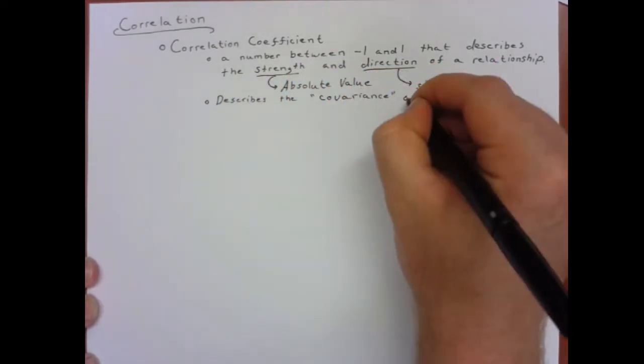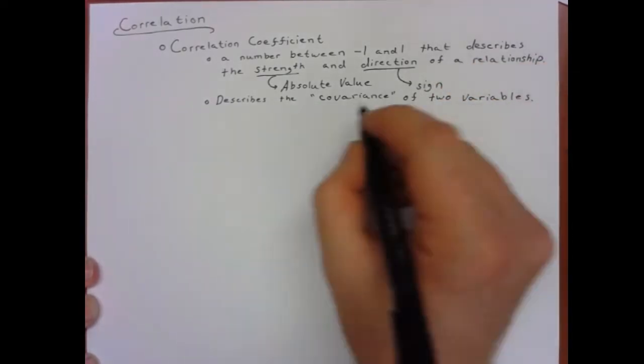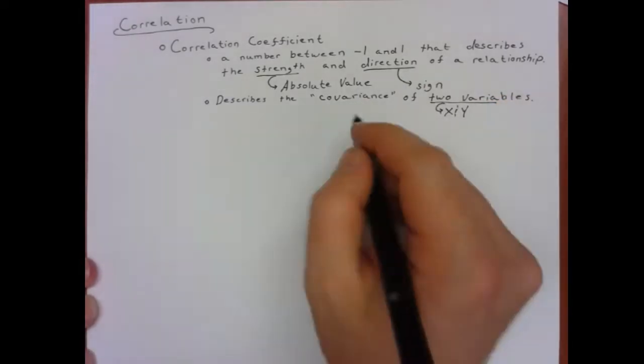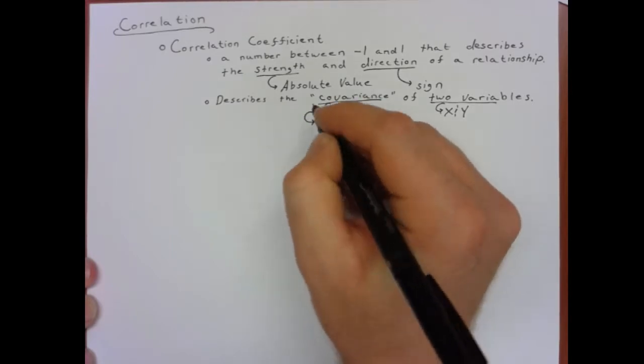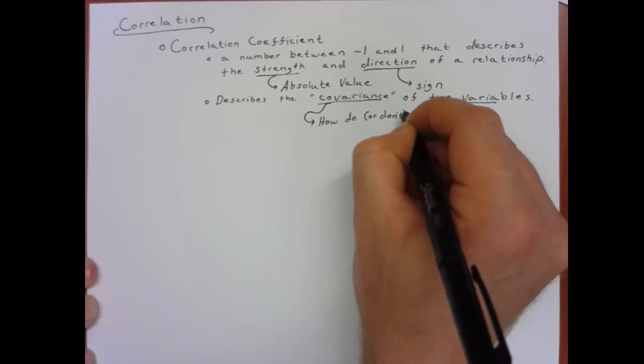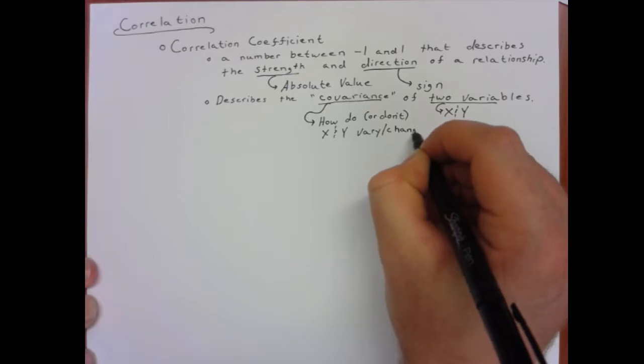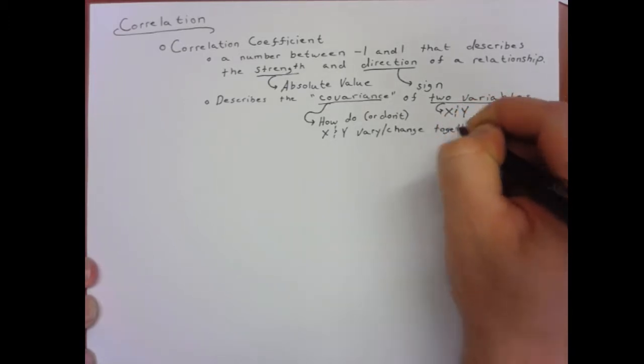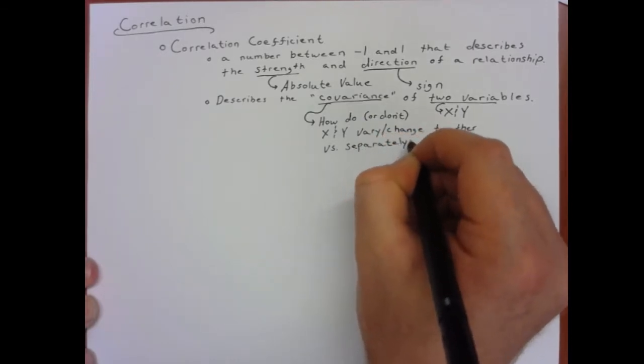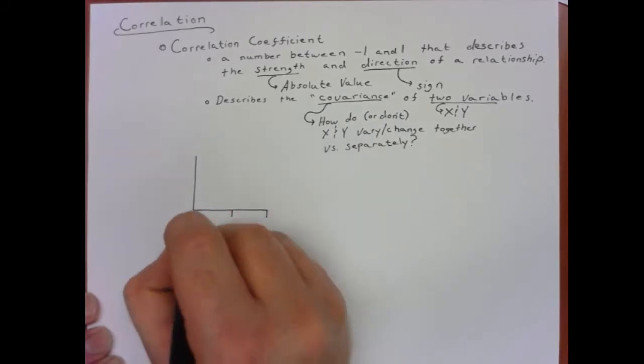Another way to think about correlations is they describe what's called the covariance of two different variables. If those two variables are named x and y, then covariance is really asking how do x and y change or vary together, or do they not change and vary together? As you go above the mean of x, do you also go above the mean of y? As you go below their means for one, do you go below the mean for the other, and proportionately so?